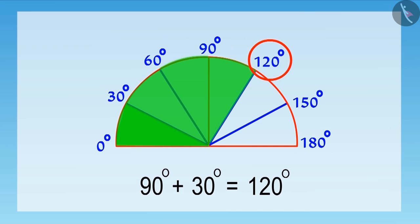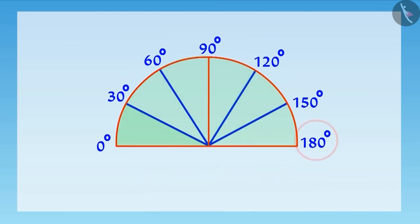Similarly, on adding 30 degrees to each of these angles, the last angle will be 180 degrees. Here, our protractor is ready.